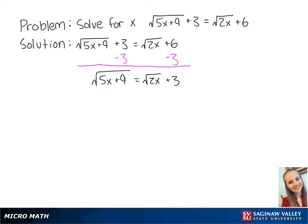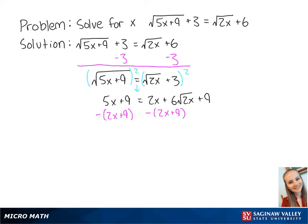Now we can square both sides of the equation to eliminate the radical on the left side. This gives us 5x plus 9 is equal to 2x plus 6 times the square root of 2x plus 9. Now we want to isolate the radical on the right side, so we're going to subtract 2x plus 9 from both sides. This gives us 3x is equal to 6 times the square root of 2x.